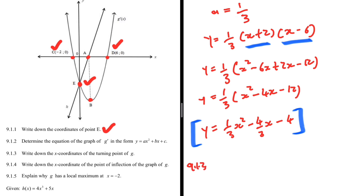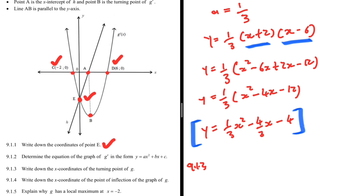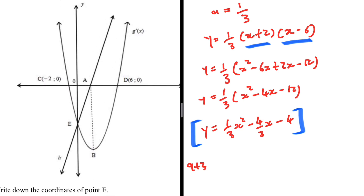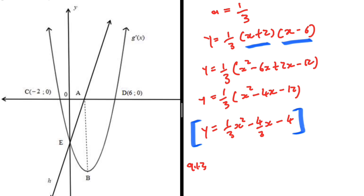Let's look at 9.1.3: write down the X-coordinates of the turning points of G. We know that the gradient at the turning point equals 0. G'(x) is the function that gives us the gradient of G(x). So where G'(x) = 0 — the X-intercepts of G' — those are the turning points of G.